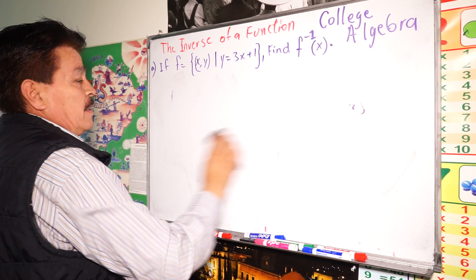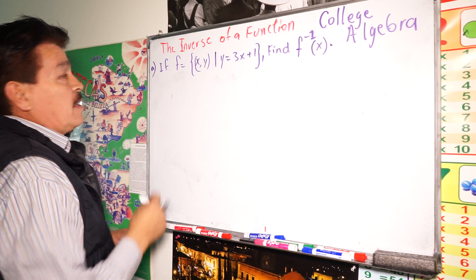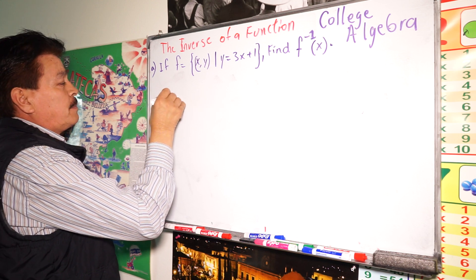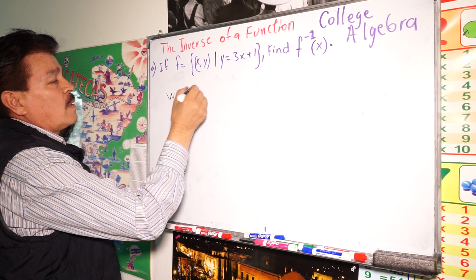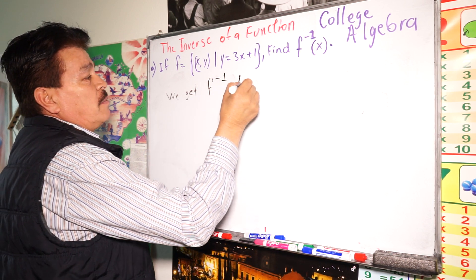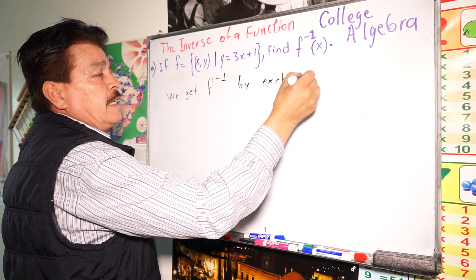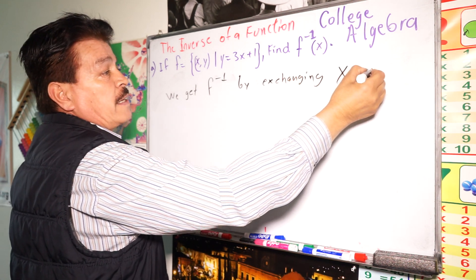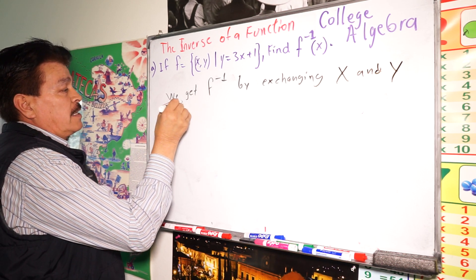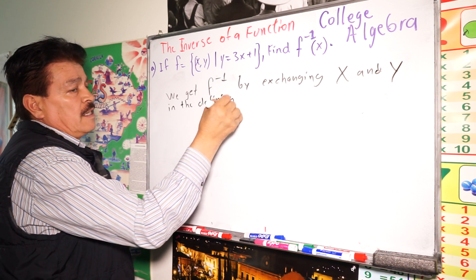We have this little example here. So, we get f inverse by exchanging, by exchanging x and y, okay? In the definition equation. And the definition equation.